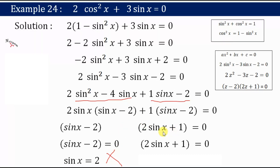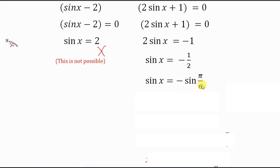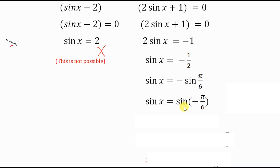For 2sinx + 1 = 0, we get 2sinx = -1, so sinx = -1/2. We can write this as sinx = -sin(π/6), since sin(π/6) = 1/2. To put this in the form sinx = sin(y), we write sinx = sin(-π/6).